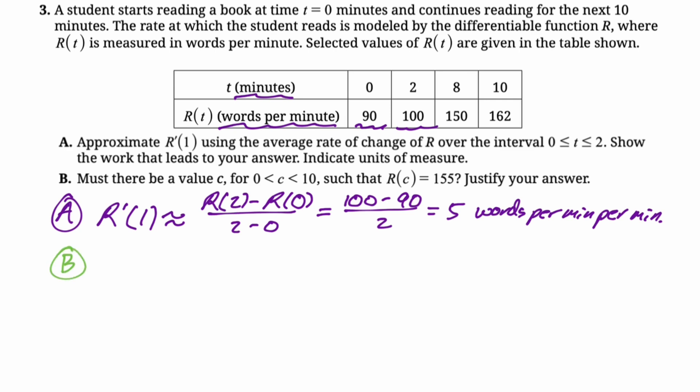We're actually only given that r of t is differentiable. So if you look at this setup, you can see we're asked about 155. In the table, you go from 150 to 162, definitely it's going to happen. So since we have a differentiable function, we have a continuous function.